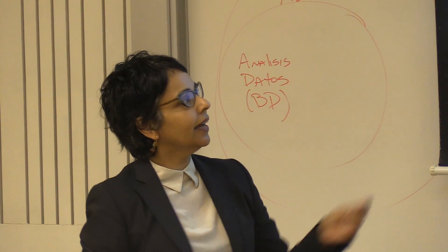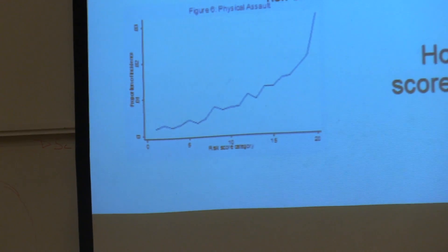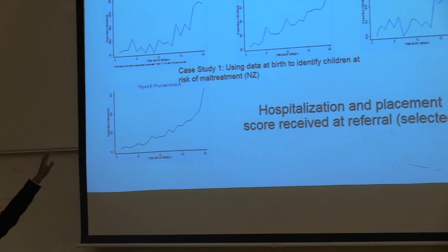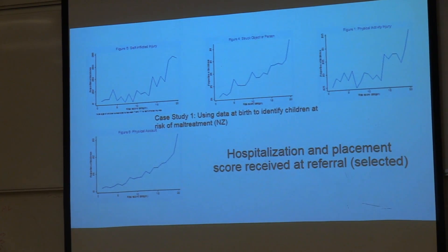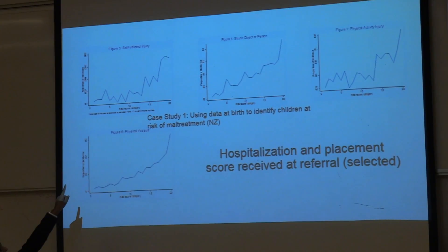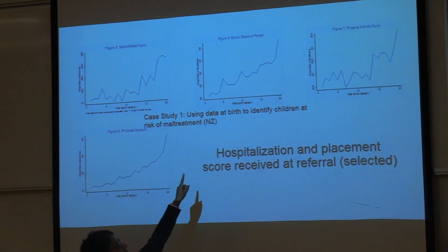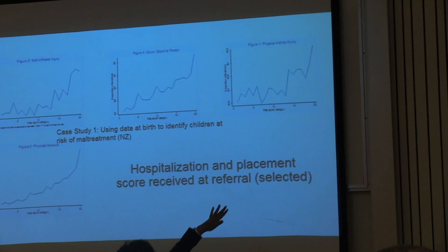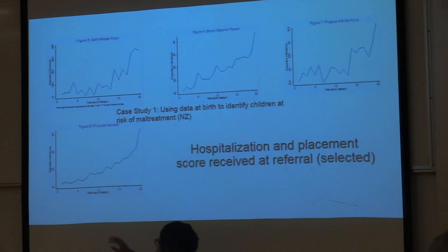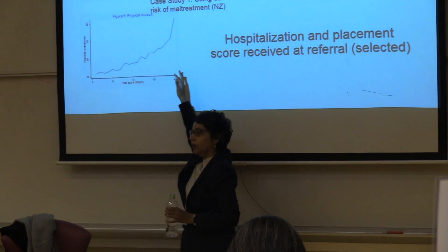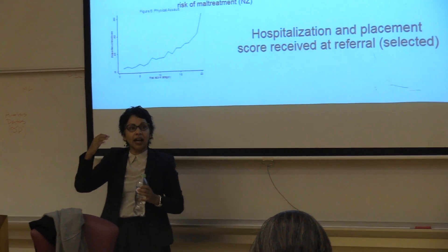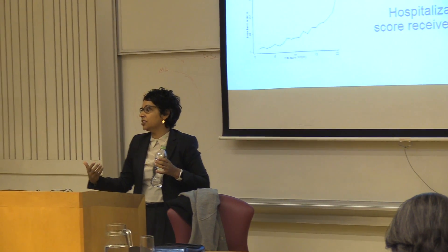This is the same information in a plot — the horizontal axis shows the risk score and the vertical axis shows hospitalization rates in the hospital data. The top left shows self-inflicted injury and suicide, with a clear gradient. The others show: being a victim of a struck object or person, physical activity injury as a small subgroup, and general physical assault. Right across the scores, the model is quite sensitive to the kinds of harm we're trying to prevent.